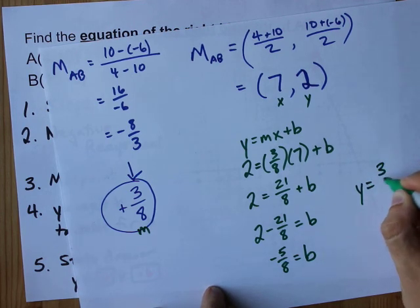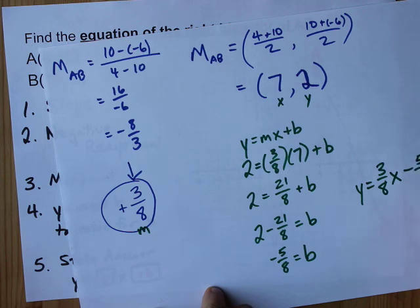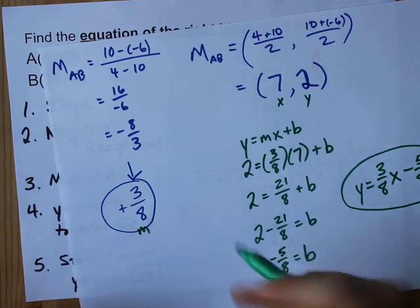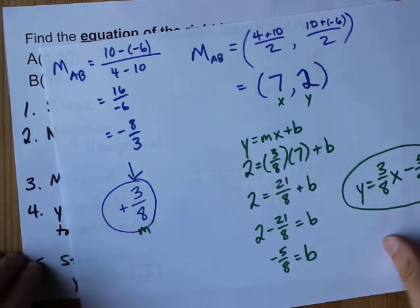y equals slope, 3 eighths, x, plus b, which is negative 5 eighths, so it's minus 5 eighths. There you go. It was pretty fast. We did that in about three minutes.